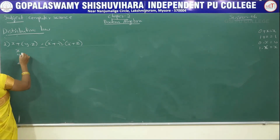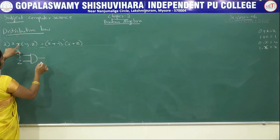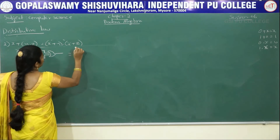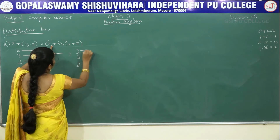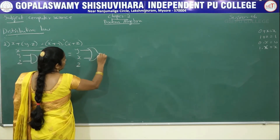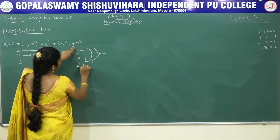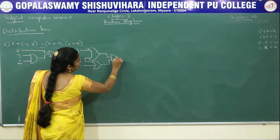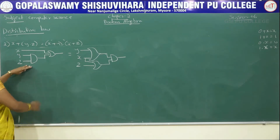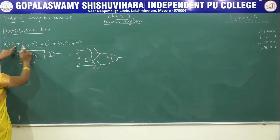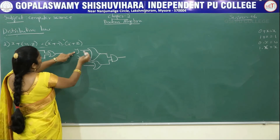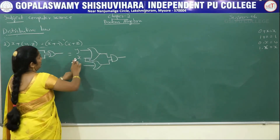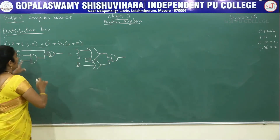For the circuit diagram of the second law: x + (y·z) — here y·z uses a D-shape (AND gate), and the plus operator connects it with x using a C-shape (OR gate). On the right-hand side, x+y uses a reverse C-shape, x+z uses another reverse C-shape, and these two are connected with a dot operator D-shape. This is the circuit symbol.